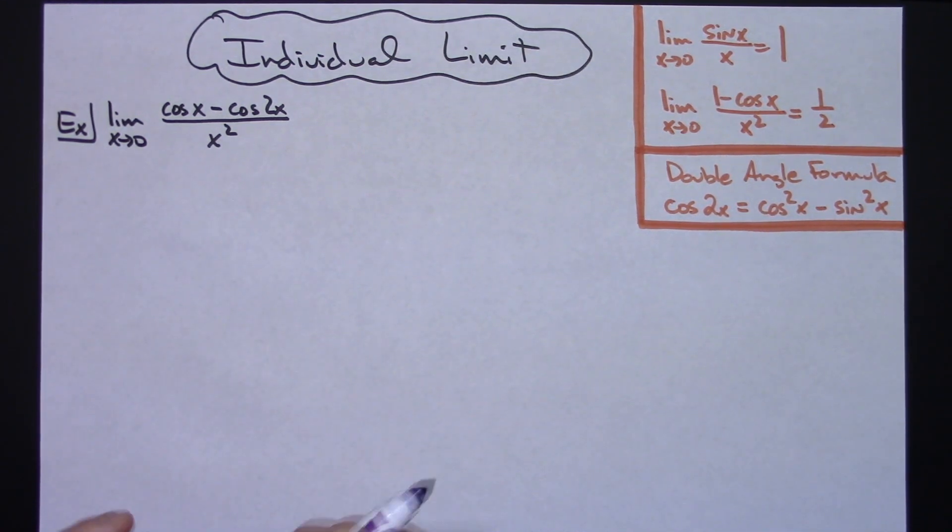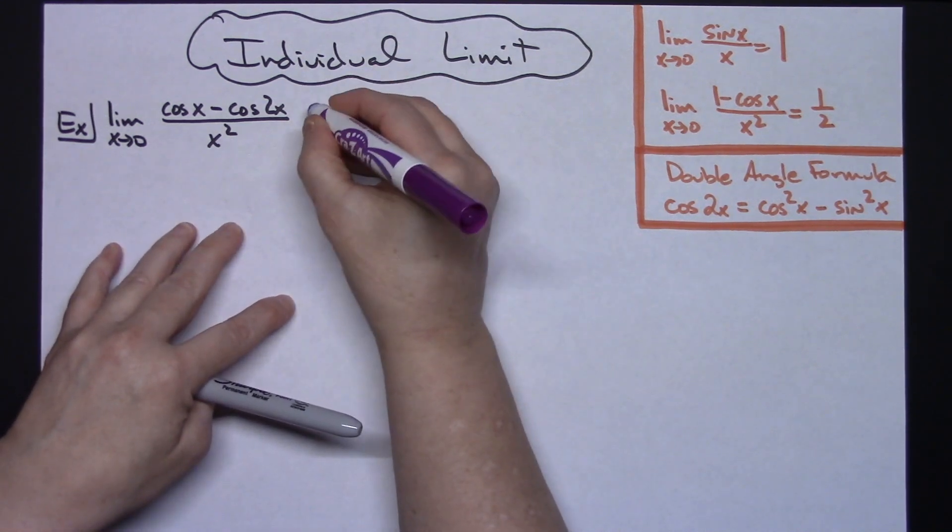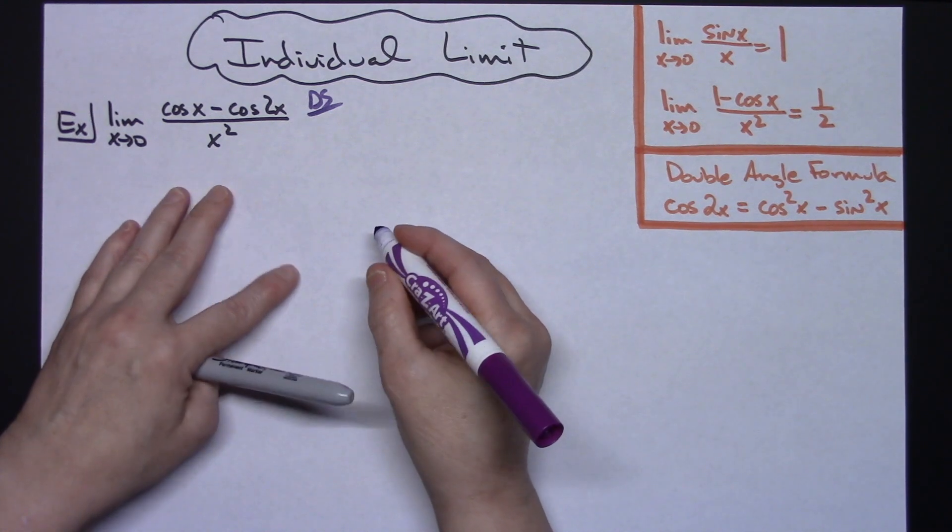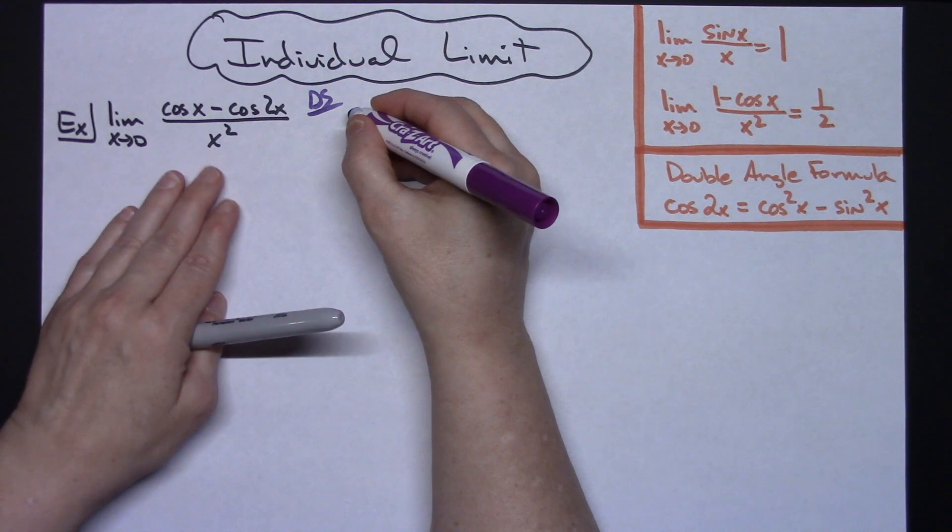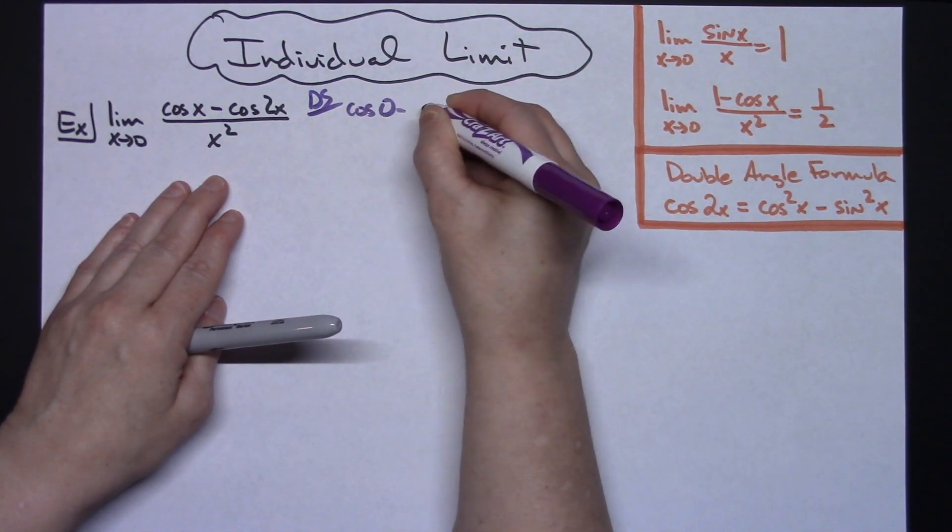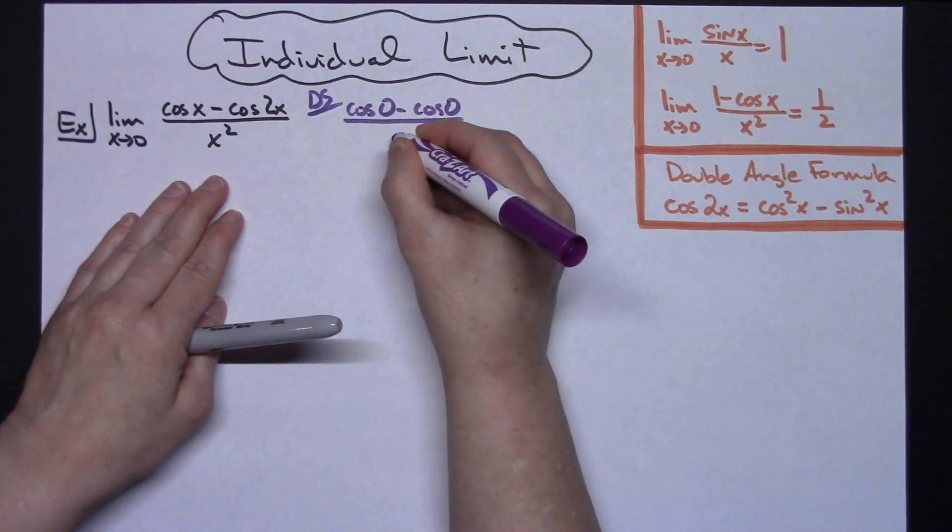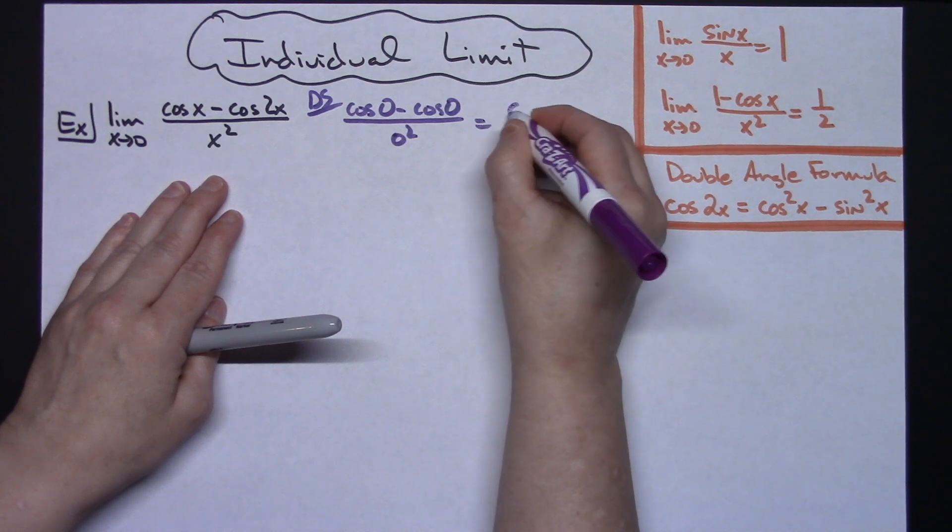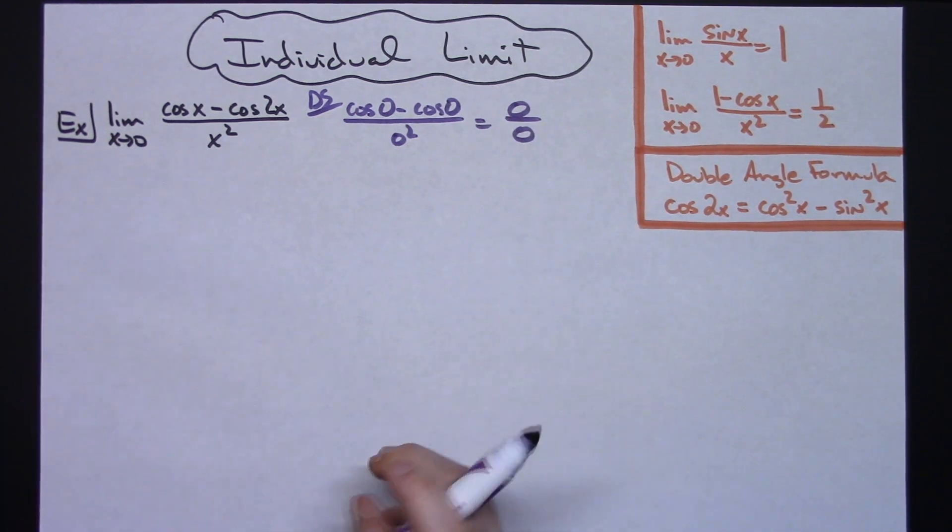So when I go to work out this trig limit, the first thing that I am going to do is a direct substitution because you should always do a direct substitution first to make sure that you have that indeterminate form before you start doing the algebra manipulation. If I plug in 0 here, I'm going to have cosine of 0 minus cosine 2 times 0, all over 0 squared. Well, anything minus itself is going to give us a 0 on top and a 0 on the bottom. So I do have that indeterminate form of 0 over 0.